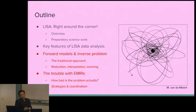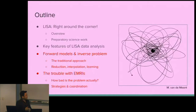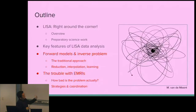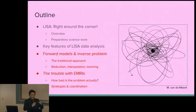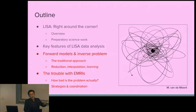Now I will talk about forward models, the inverse problem, and the trouble with these for the particular case of EMRIs. I'll start off with the traditional approach to modeling and inference in gravitational wave astronomy, discuss proposed strategies for improving this for LISA data analysis, give a brief update on the status of EMRI modeling, and finally suggest how these problems could actually be solved for EMRIs.